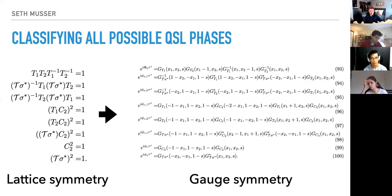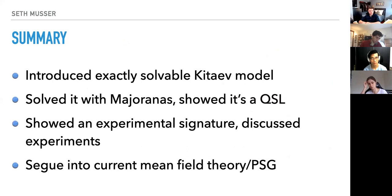We can use symmetries and think about how the mean field parameters change under those symmetries to define some projective symmetry group. I'm a little over time, so to summarize: I introduced a solvable Kitaev model, showed that it's a quantum spin liquid, showed an experimental signature, briefly discussed it, and segued into mean field theory and projective symmetry groups.